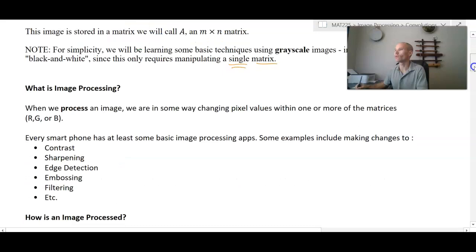So when we process an image, we are in some way changing pixel values within one or more of the matrices R, G, or B.